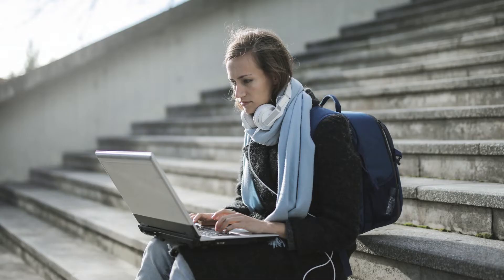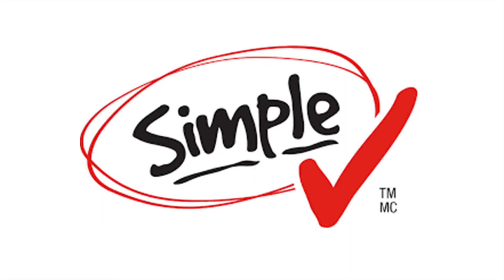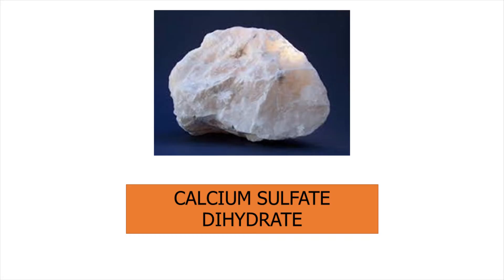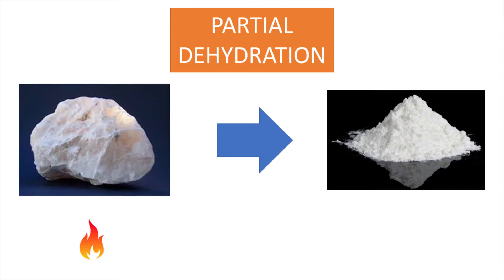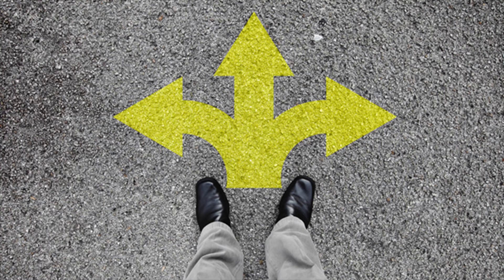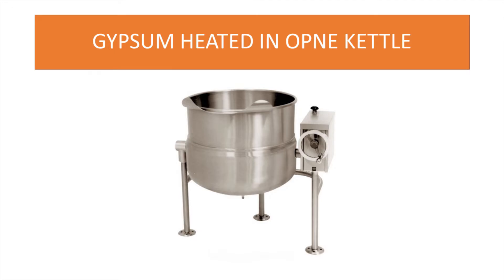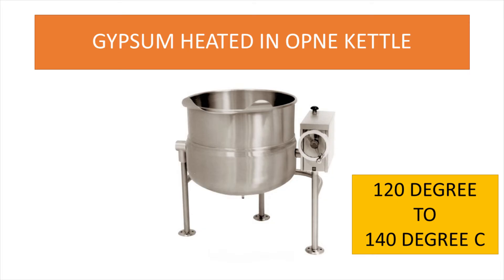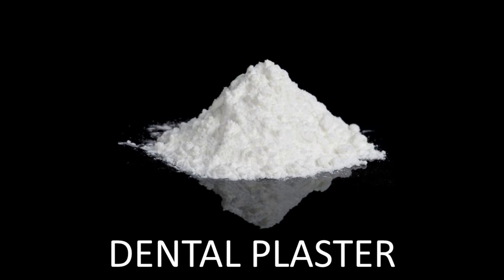Let us understand in a very simple way how gypsum products are manufactured for dentistry. You take gypsum — calcium sulfate dihydrate — and heat it to partially dehydrate it, ending up with calcium sulfate hemihydrate. Depending on how you heat it, you get different types. For example, if you heat the original gypsum in an open kettle at 120 to 140 degrees Celsius, you get beta calcium sulfate hemihydrate, commonly marketed as dental plaster.